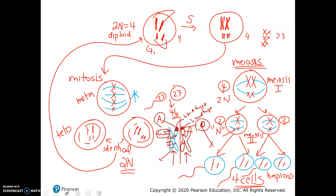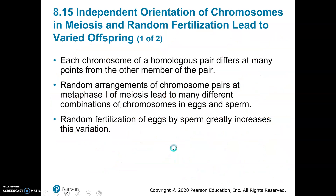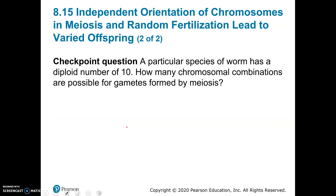So moving on — that was just a quick preview. To wrap this up: each chromosome pair lines up randomly compared to every other pair. And depending on the other parent, it's also randomly fertilized. So every time an egg gets fertilized, you have a different sperm and a different egg with a different combination. No two offspring are going to be identical to each other.